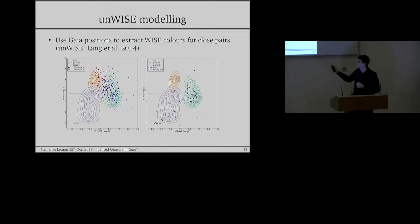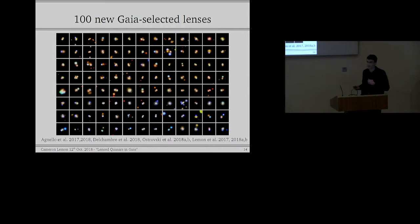So using all of these techniques, the WISE forced photometry and the proper motions and the astrometric excess noise, we've recently discovered a new set of 100 lensed quasars, and this really has only been thanks to Gaia's way of removing the contaminant systems.